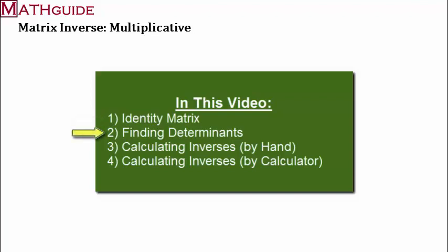In our first section, we're going to talk about what an identity matrix is. Next, we're going to talk about how to find a determinant. Next, we're going to calculate the inverse of a matrix by hand. And then last, we're going to talk about how to calculate an inverse using a calculator. Alright, let's get started.